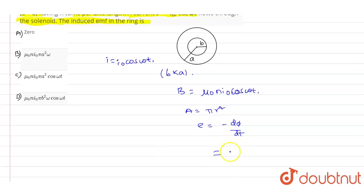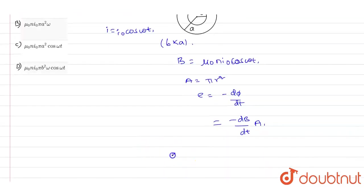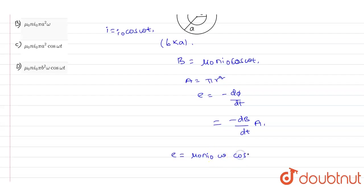We can write the induced EMF value as E = μ₀n i₀ ω cos(ωt) πa². Instead of πr², I'm writing πa² because here we have the radius as a.